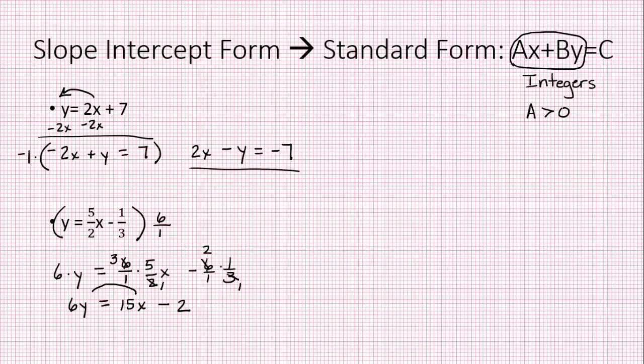Now let's move the x term to the other side by subtraction. So I've got negative 15x plus 6y equals negative 2. And I want that x term to be positive so let's multiply that by negative 1. Everything changes its sign. And there is standard form.